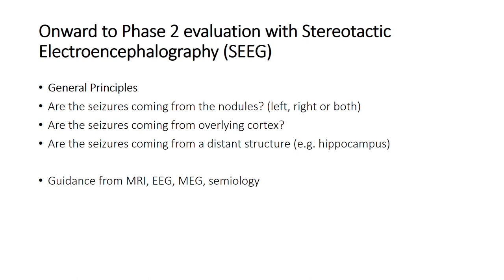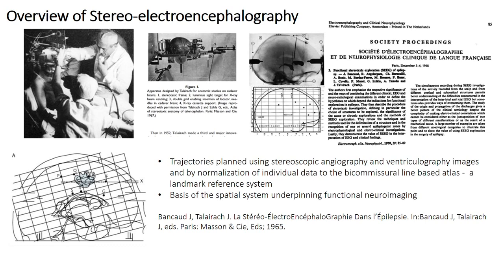We move onward to what we call a phase two evaluation where we put electrodes inside the brain — inside the nodules and in overlying cortex — to see where the seizures are coming from. The general principles are to see if the seizures are indeed coming from the nodules, and since these patients often have nodules on both sides, we want to see whether they're coming from the left, the right, or both. The other possibility is that seizures are coming not only from the nodules but from overlying cortex, and sometimes from overlying cortex alone. Rarely, the seizures may arise from distant structures such as the hippocampus. We seek guidance from the MRI scan, EEG, MEG, and the seizure features of the patient. I'll now hand over to Dr. Tandon about the actual surgery.